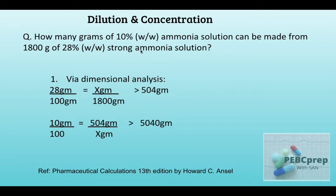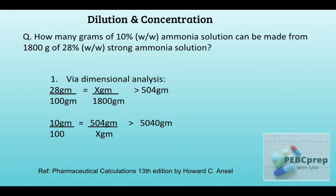Now we use the 504 grams of ammonia to find the final weight of a 10 percent solution. 10 percent means 10 grams in 100 grams. So we calculate the final weight of solution from 504 grams of ammonia and get 5040 grams. That's how it's done with dimensional analysis.